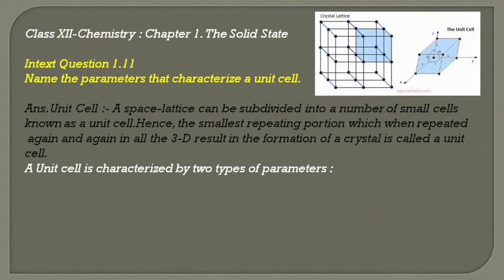A unit cell is characterized by two types of parameters. First, three edges represented as a, b, and c.